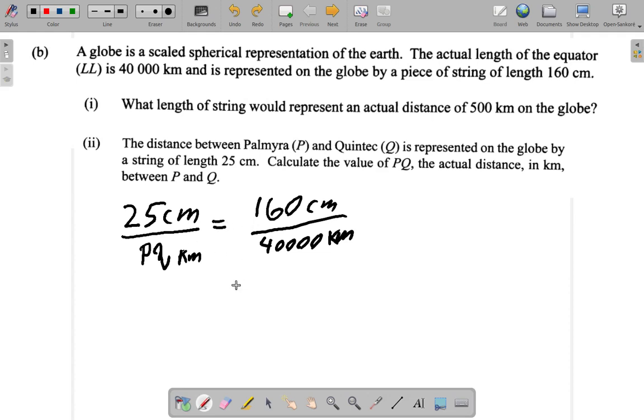Or you could use what is popularly known as the cross multiplication method. You multiply these, so you would say 25 cm by 40,000 kilometers equals 160 cm by PQ kilometers. Then after that I divide by 160.